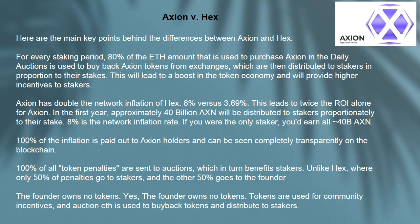Here are the main key differences between Axion and HEX. For every staking period, 80% of the ETH amount used to purchase Axion in the daily auctions is used to buy back Axion tokens from exchanges, which are then distributed to stakers in proportion to their stakes. This will lead to a boost in the token economy and provide higher incentives to stakers.